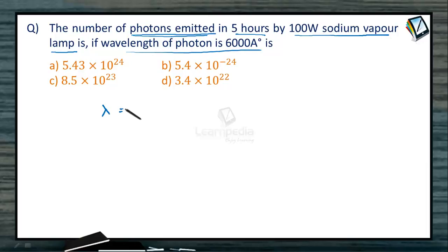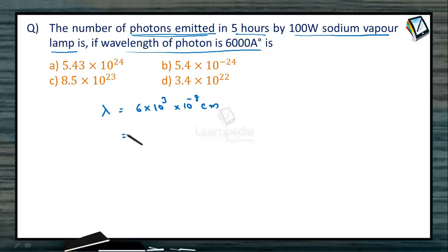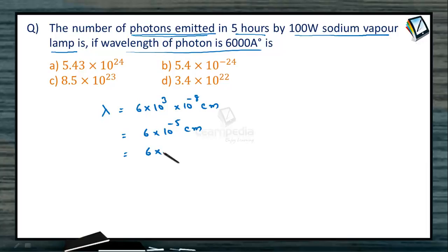We are given the wavelength of the photon as 6000 angstrom units, which is 6 × 10³ × 10⁻⁸ centimeters, coming out to 6 × 10⁻⁵ centimeters. When converted into meters, it becomes 6 × 10⁻⁷ meters.